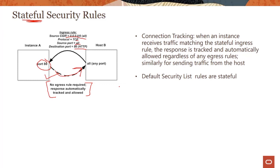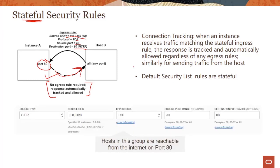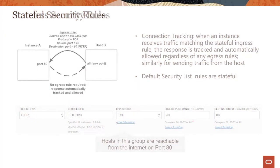When you create a rule in the console, it is stateful by default. So if you specify source CIDR as any address, protocol TCP, any source port, and destination port 80, incoming traffic on port 80 will also automatically allow the response out. So if you go to the browser, put in the IP address, you can see a page come up — you're sending traffic in and receiving the response out without needing to write an explicit egress rule.